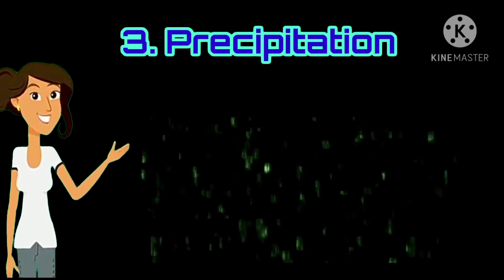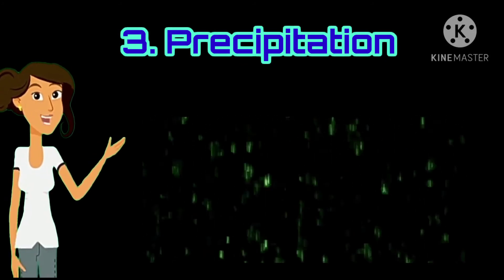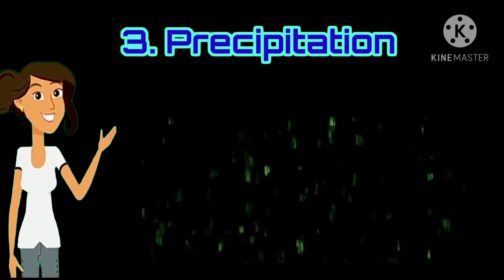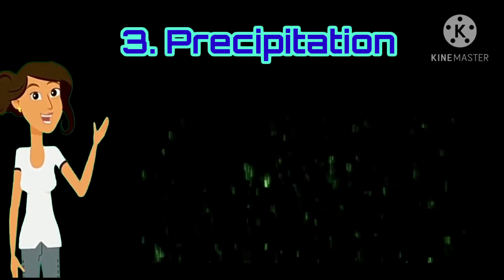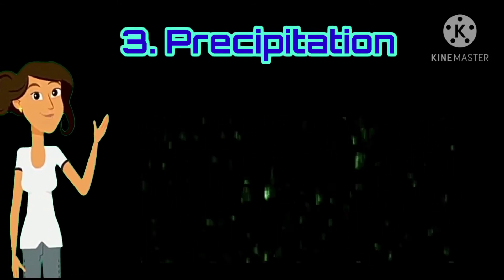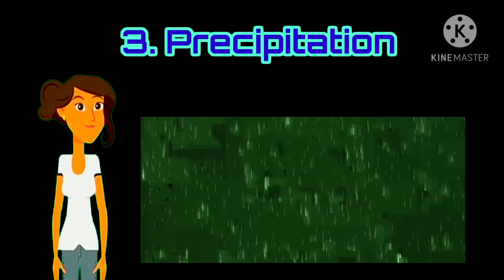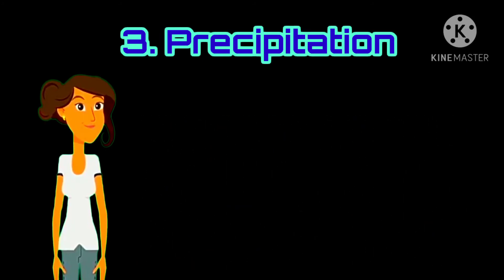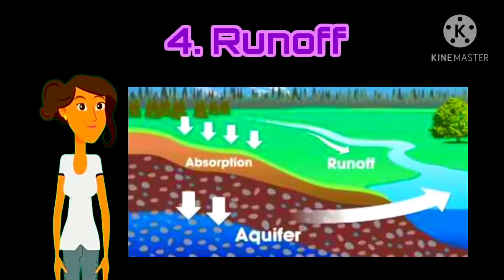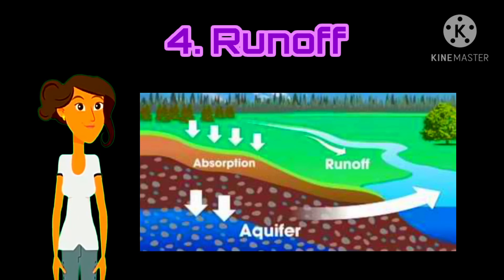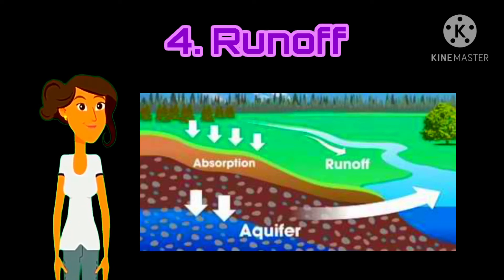Precipitation is water released from clouds in the form of rain, freezing rain, sleet, snow, or hail. It is the primary connection in the water cycle that provides for the delivery of atmospheric water to the Earth. Runoff is the part of the water cycle that flows over land and surface water instead of being absorbed into the ground water or evaporating.